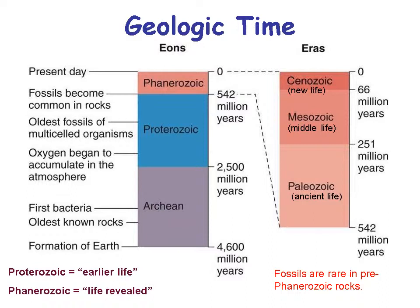Geologic time is divided into eons. Present day is part of the Phanerozoic eon, which goes back 542 million years. The Phanerozoic is then split into three eras: the Paleozoic era from 542 to 251 million years ago, the Mesozoic era from 251 to 66 million years ago, and then the Cenozoic era up until the present.